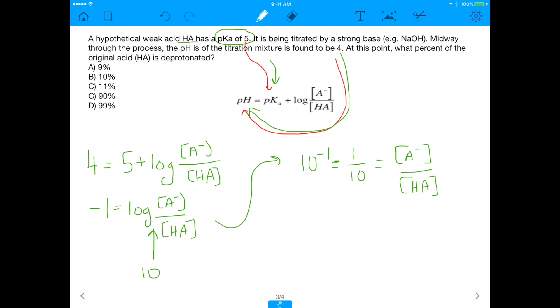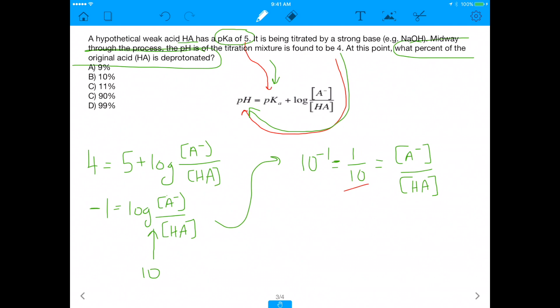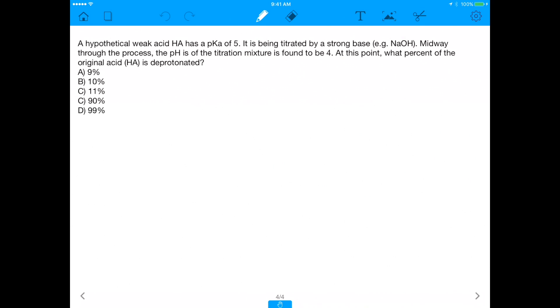But what is this question asking? This question is asking us, what percent of the original acid, which is HA, what percent of the original acid, HA, is deprotonated? So it's asking us, how much of HA is deprotonated? Some of you might be tempted right away to answer 1 tenth, because that's what we found, right? We found 1 tenth. But that's actually not the answer here. And I'll tell you why that's not the answer.